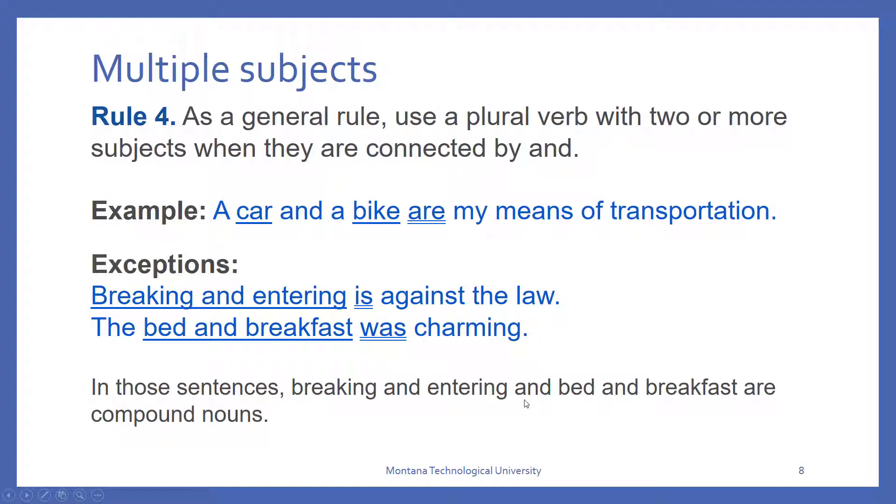When we have two or more subjects connected by an and, we use a plural verb. A car and a bike are. Exceptions when the compound actually performs as a singular noun. Breaking and entering is a legal term, so it's just a singular thing, is. Bed and breakfast is a term that's combined as a compound noun, so it acts as a singular, and we need a singular verb. Wow, the English language is so confusing.